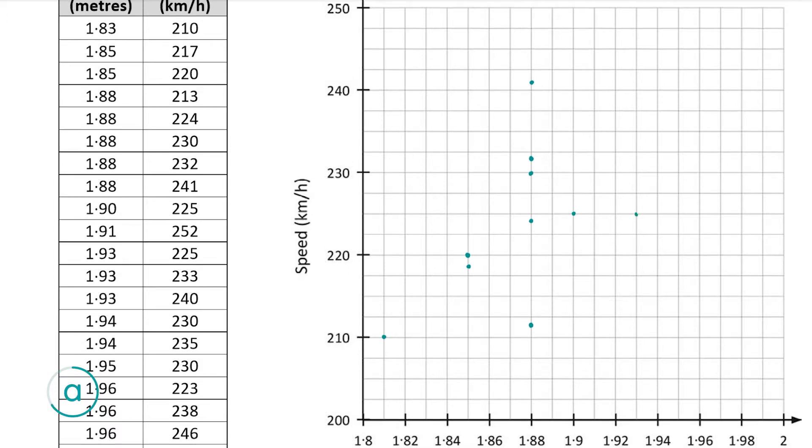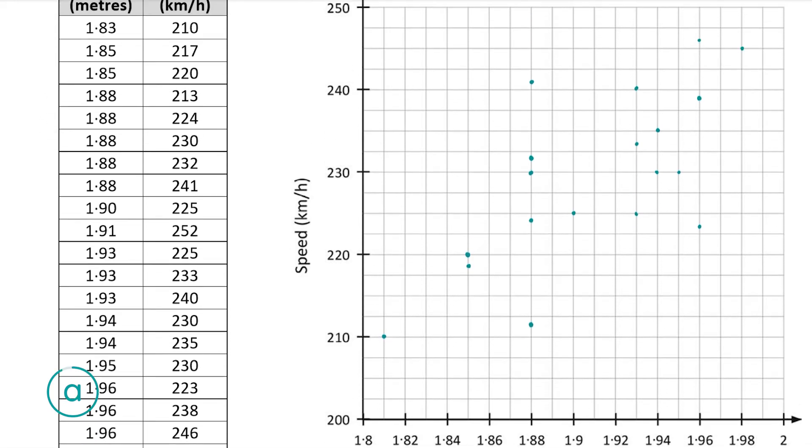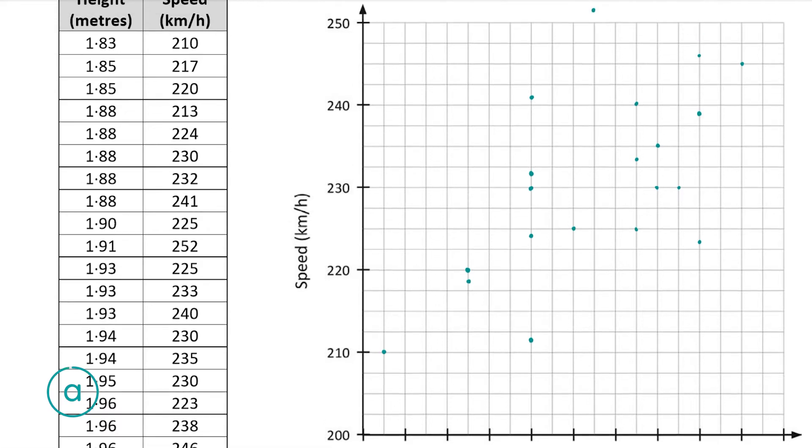So let's get started. Your points should look something like that and there's one just off the graph up there as 252 is not on the y-axis that we're given.